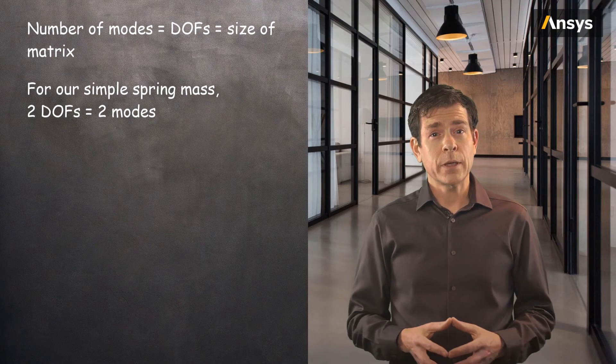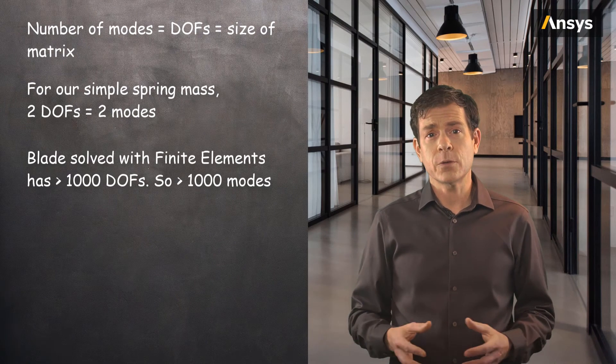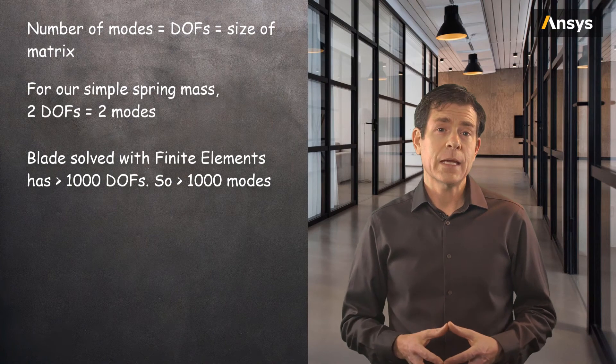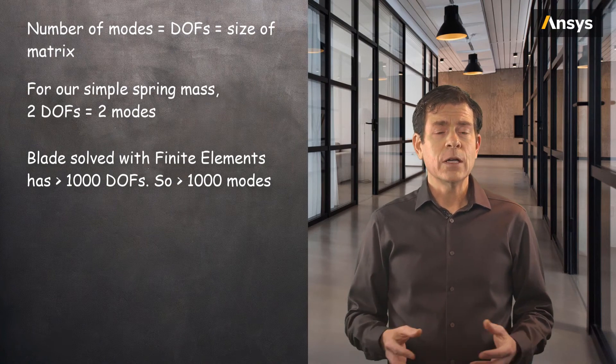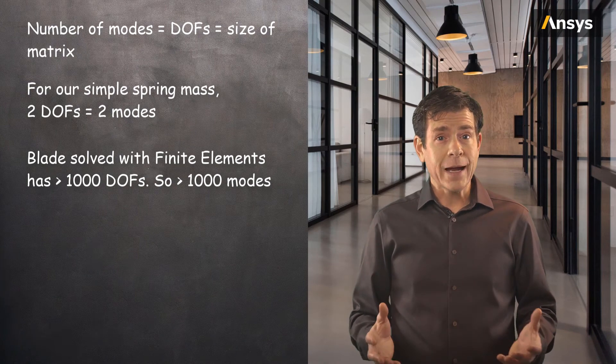For the wind turbine blade, the structure is solved by finite element software with over 1000 degrees of freedom in this case, so there are over 1000 modes that can be calculated. However, very rarely do engineers need to find all the modes of a structure.